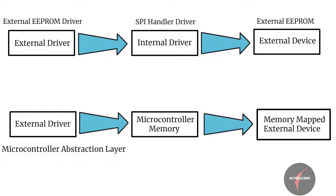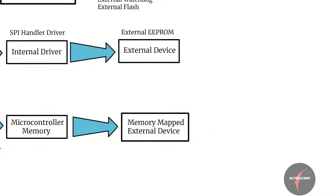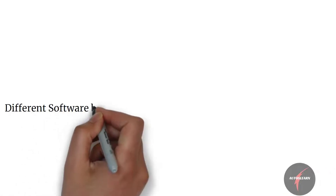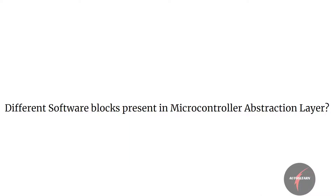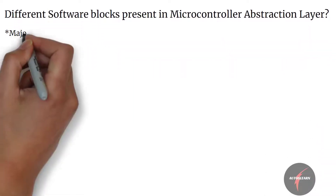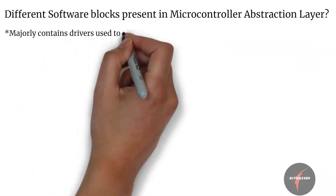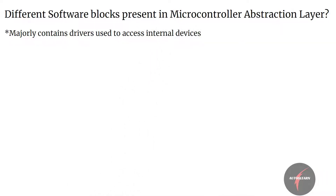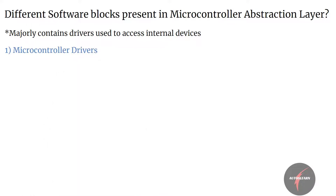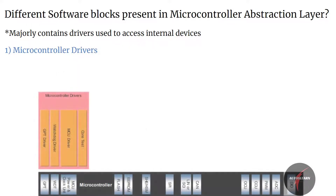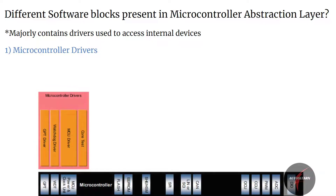With this understanding, let's get into our main topic: what are the different software blocks or components present in the microcontroller abstraction layer? The microcontroller abstraction layer majorly contains drivers used to access internal devices of the microcontroller. These drivers can be categorized into the following groups. Firstly, microcontroller drivers, which contain drivers for internal peripherals such as internal watchdog, general purpose timer, etc.